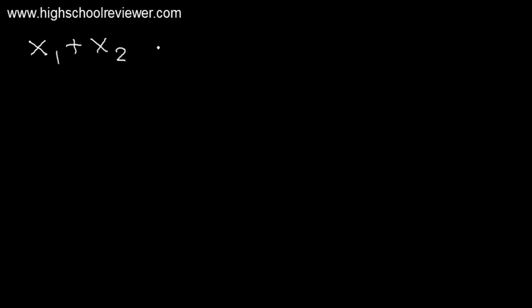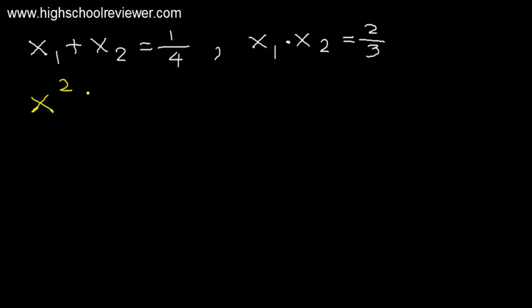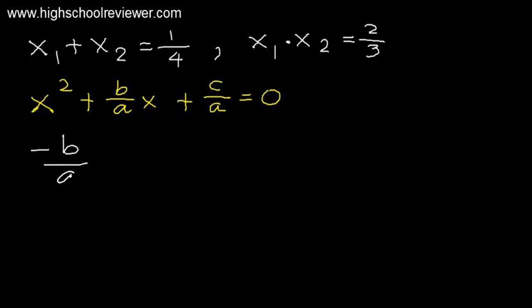Find the quadratic equation using x sub 1 plus x sub 2 and x sub 1 times x sub 2. Our given: x sub 1 plus x sub 2 equals 1 over 4, and x sub 1 times x sub 2 equals 2 over 3. One form of a quadratic equation is x squared plus b over a times x plus c over a equals 0. We know that negative b over a equals x sub 1 plus x sub 2, and c over a equals x sub 1 times x sub 2.